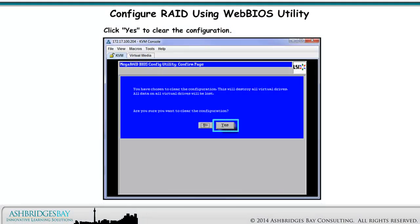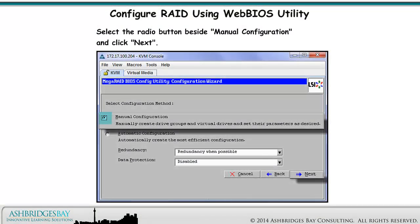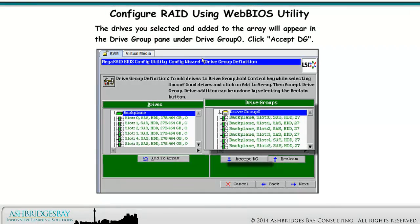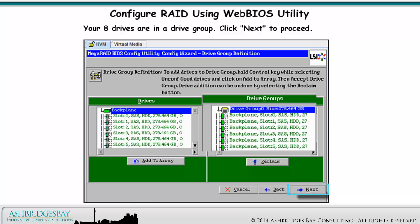Click Yes to clear the configuration. Select the radio button beside Manual Configuration and click Next. For our RAID 5 configuration with eight drives, we need a single drive group. Select all eight drives and click Add to Array. The drives you selected and added to the array will appear in the Drive Group pane under Drive Group 0. Click Accept DG. Your eight drives are in a group. Click Next to proceed.